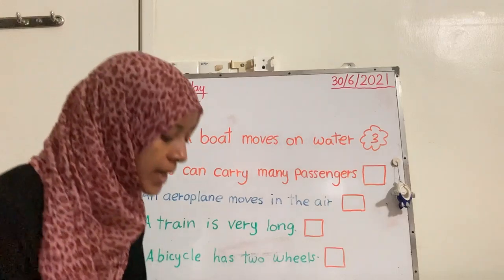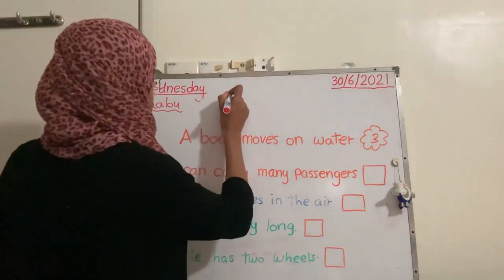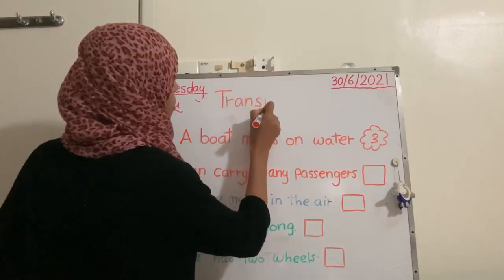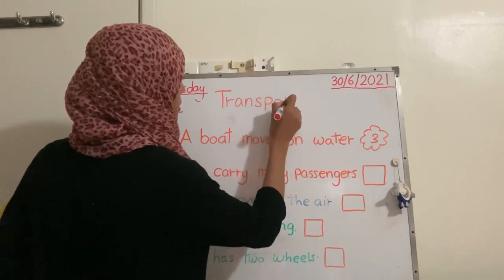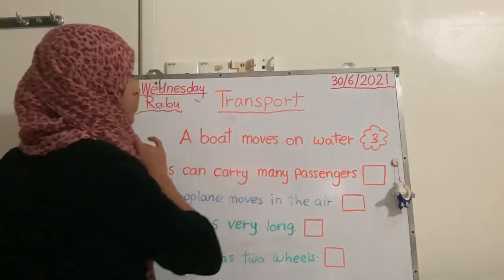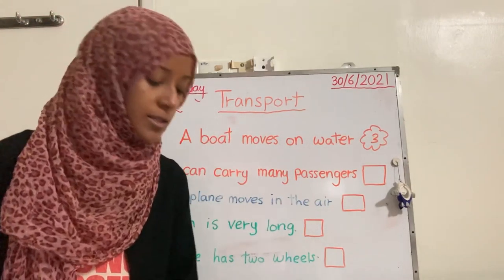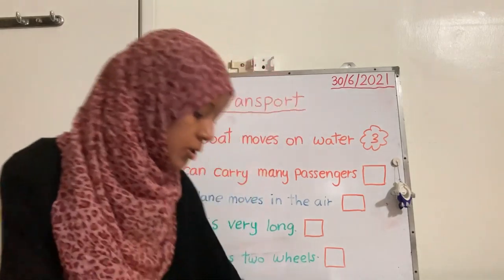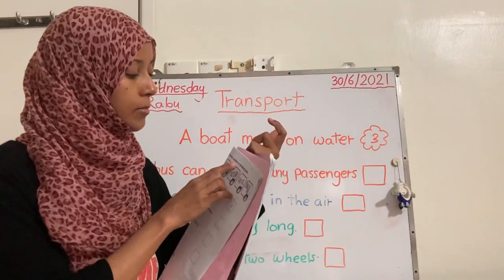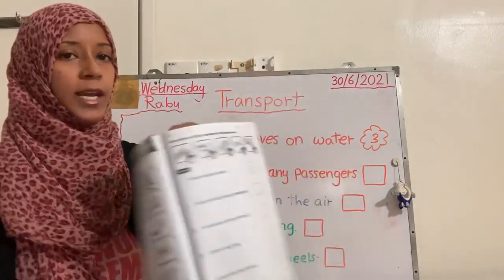That's why we call them land transport. Let me write the title. We still have about transport — it's a continuation from last week. So today we have an exercise. You have to do it by reading and writing the number in the boxes given.